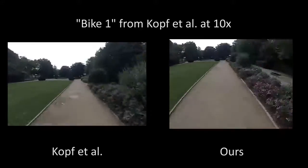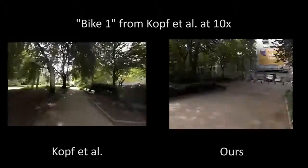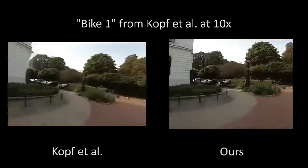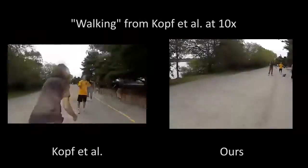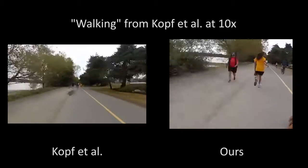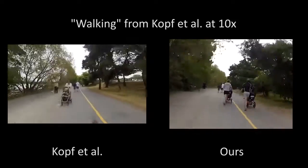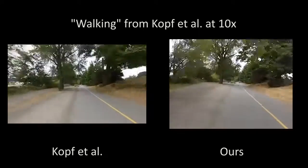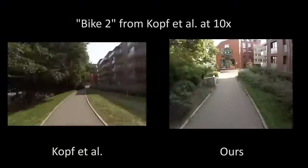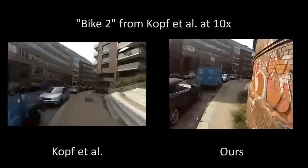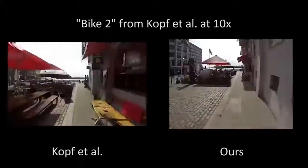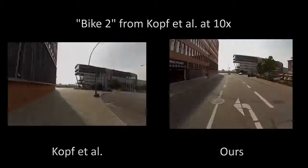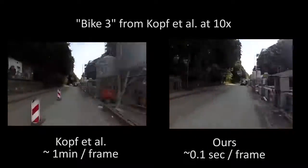Here we compare to a set of videos from Kopf et al. The Kopf et al. method is based on 3D reconstruction, while ours is based on 2D tracking. Our results are comparable, with a little less consistent constant motion, but with many fewer artifacts on dynamic objects in the scene. Our results compare favorably; however, our method is hundreds of times faster.